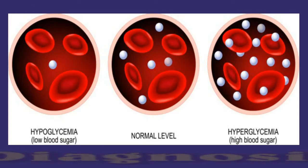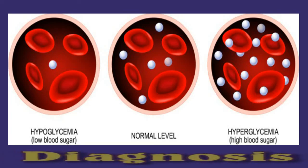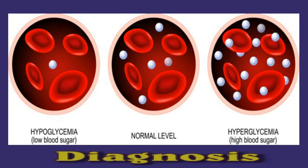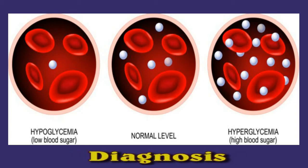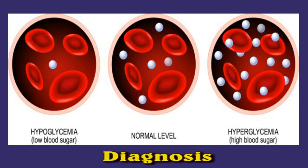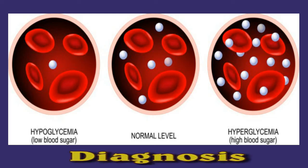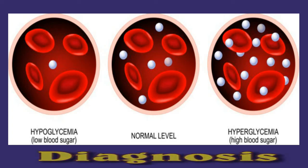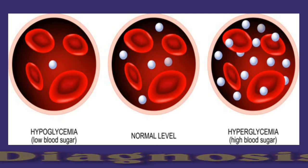Diagnosis: to diagnose hypoglycemia, a doctor will first ask a person about their symptoms. If the doctor suspects hypoglycemia, they may perform a blood test. Blood sugar levels below 70 milligrams per deciliter can indicate hypoglycemia. However, everyone has a different baseline blood sugar level, and the measurement that determines hypoglycemia can vary.